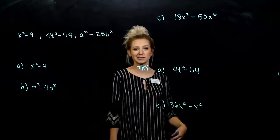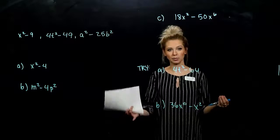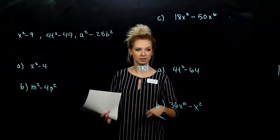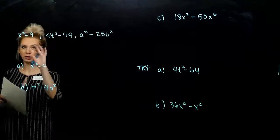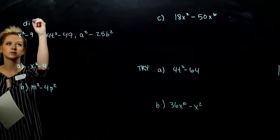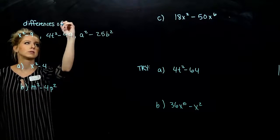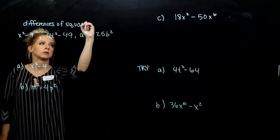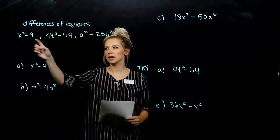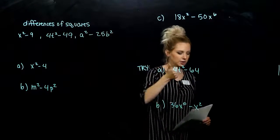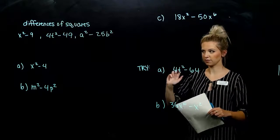The next special case we're going to look at are differences of squares. When I have a perfect square minus a perfect square, we can factor them very quickly. Whenever we see a binomial with subtraction involved, the first question should always be: is it a difference of squares? If it is, it factors very nicely.